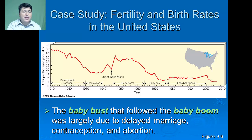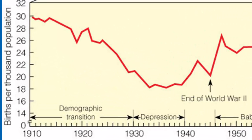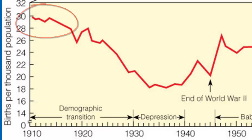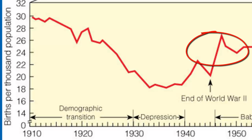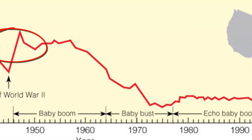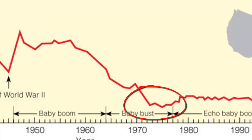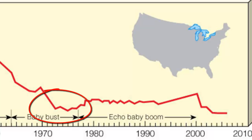The United States has its own varied history of changes in fertility and birth rates in response to historical and sociological events. In the early 1900s, fertility rates were very high as large families were needed to support agricultural communities. As industrialization occurred, fertility rates dropped during the Depression. The end of World War II brought a significant baby boom lasting several decades, followed by a baby bust in the 70s, an echo boom in the 80s, and recently a drop in overall fertility rates.